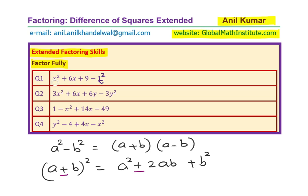We have not three but four terms in each one of them, x² + 6x + 9 - t². I would like you to think about it, write down the answer and then look into my strategies to factor these questions.